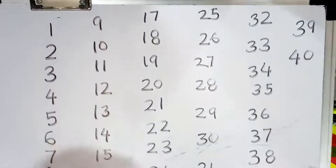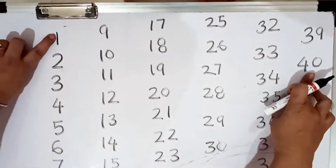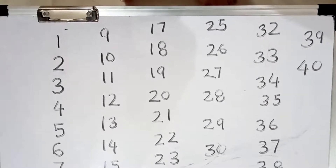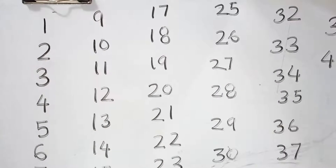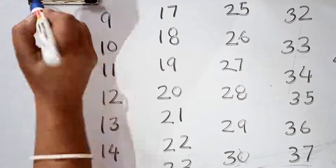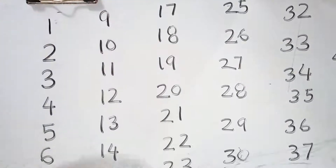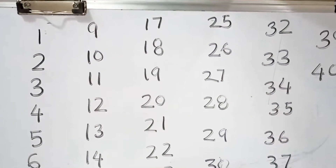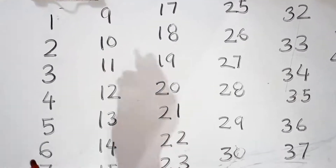These are the numbers from 1 to 40. Now I will show you how the skip counting of 4 is coming. Skip means jump — you know, skip means jump. So the first thing you will do is jump.